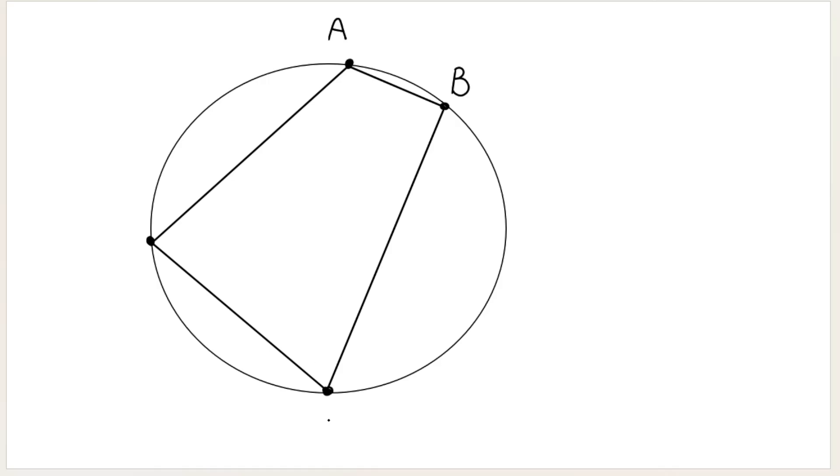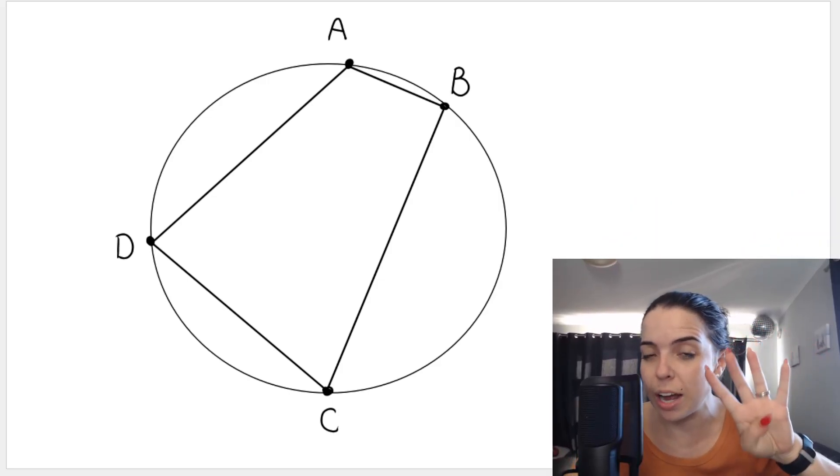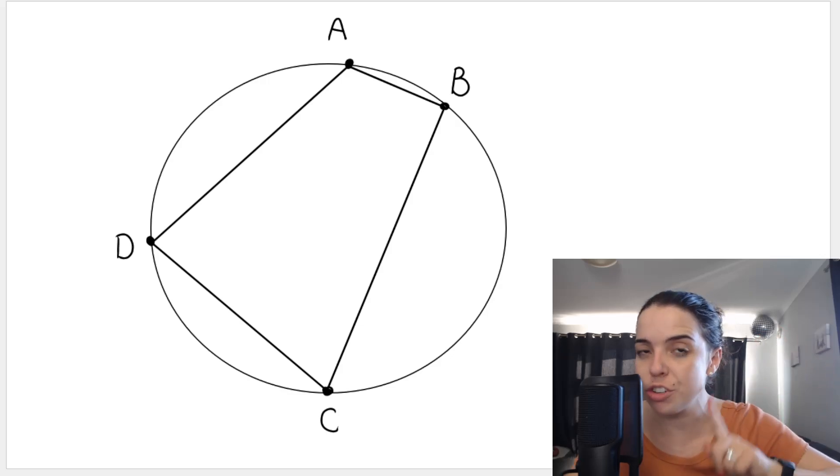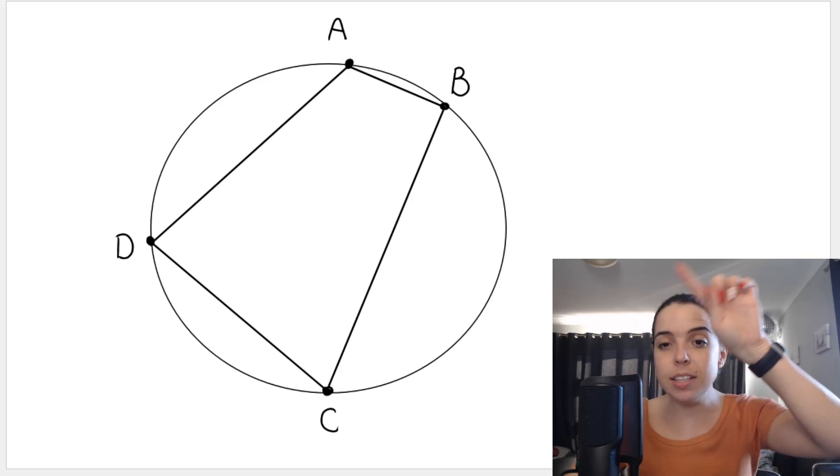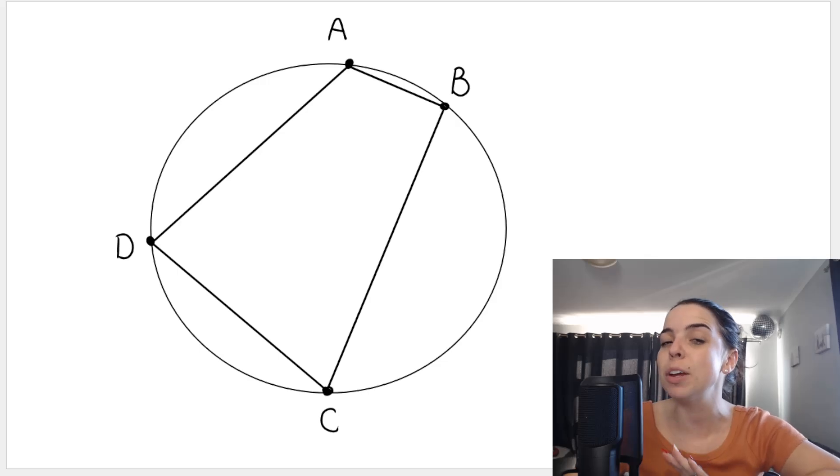Let's call this quadrilateral A, B, C, D. First of all, I hope you see that it is a quadrilateral because it has four sides, so quad meaning four. Now, because this particular quadrilateral has its corners, its vertices sitting on the circumference, this type of quadrilateral has a special name. It is called a cyclic quad.